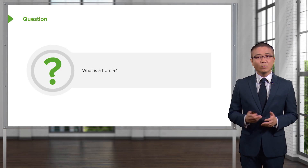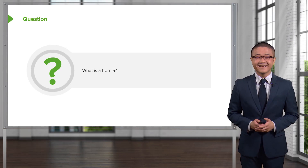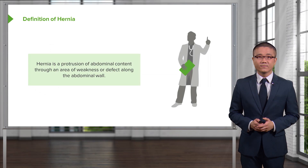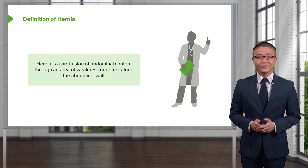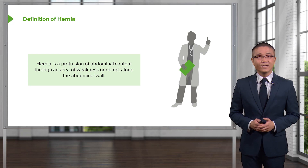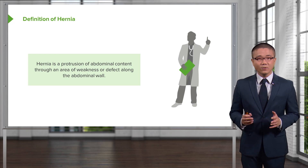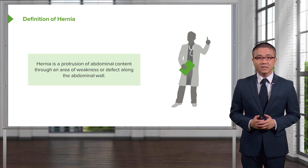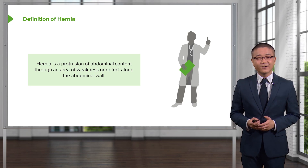But what is a hernia? A hernia is a protrusion of abdominal content through an area of weakness anywhere along the abdominal wall. This area of weakness or defect can be congenital or acquired.